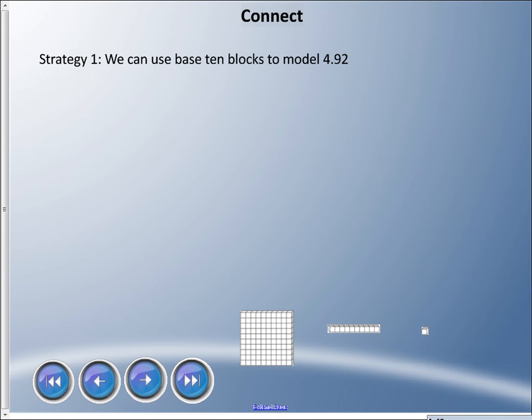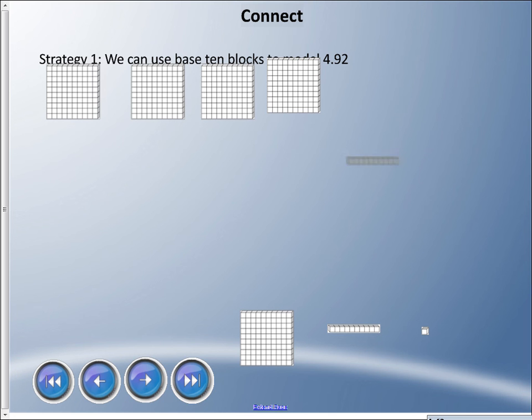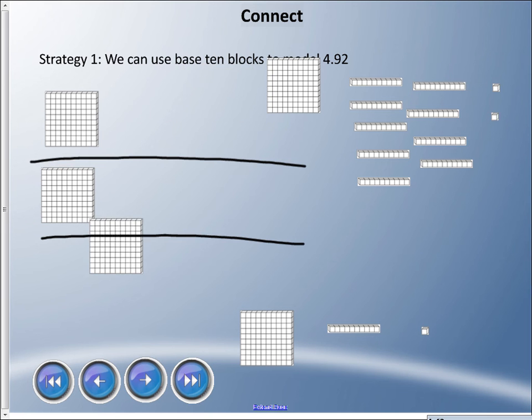The first strategy is using base 10 blocks. I don't exactly recommend this, but I want to show you visually how this could work. First thing I need to do is get 4.92, so I have four wholes and nine tenths and two hundredths. I'm going to divide this into three equal groups. I'll draw some lines across so I can model where the groups are. I have one here, one here, and one here.